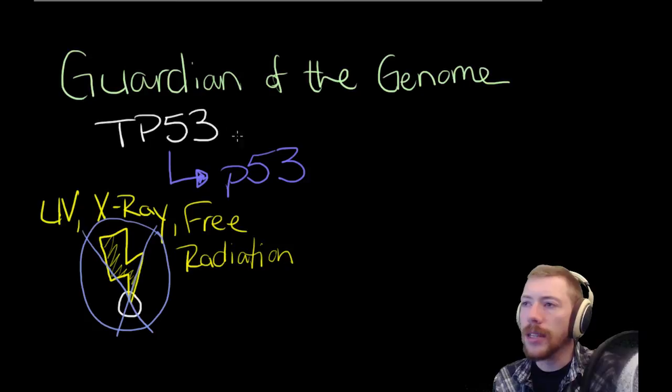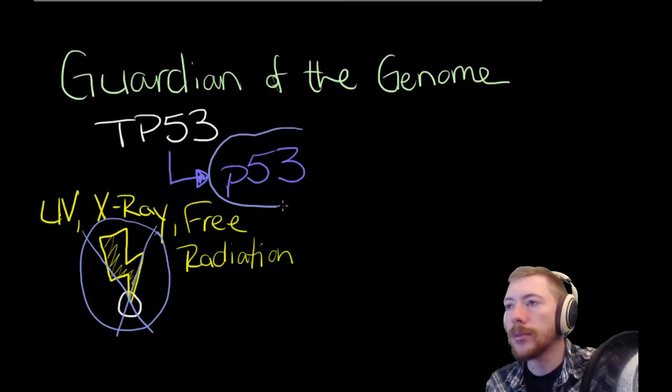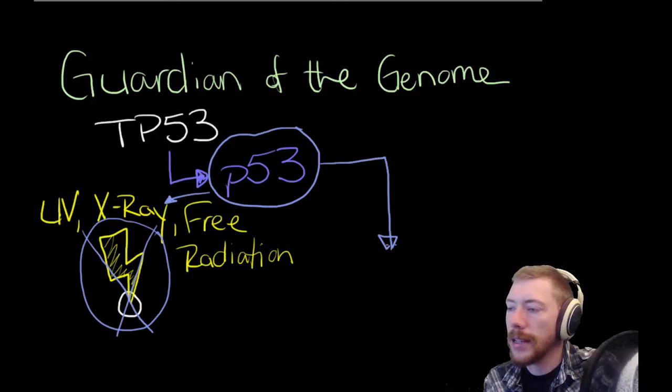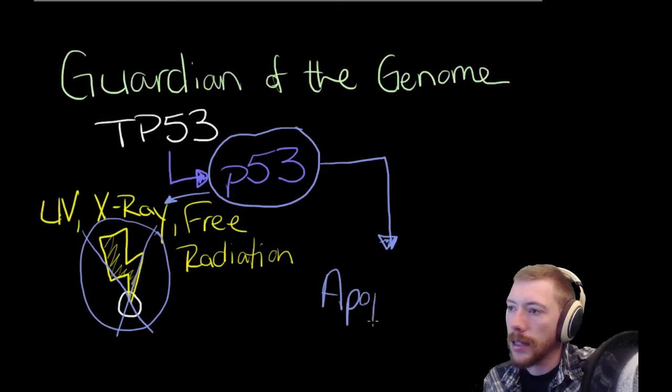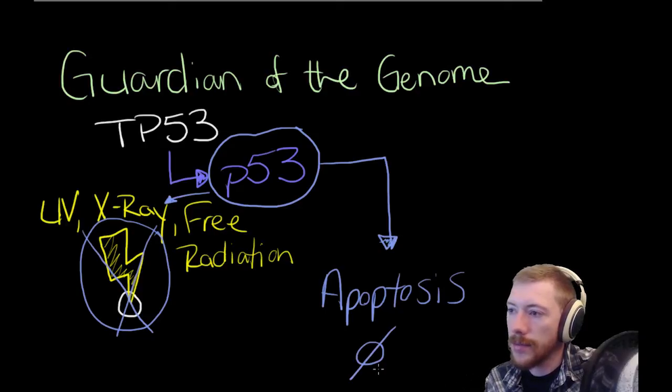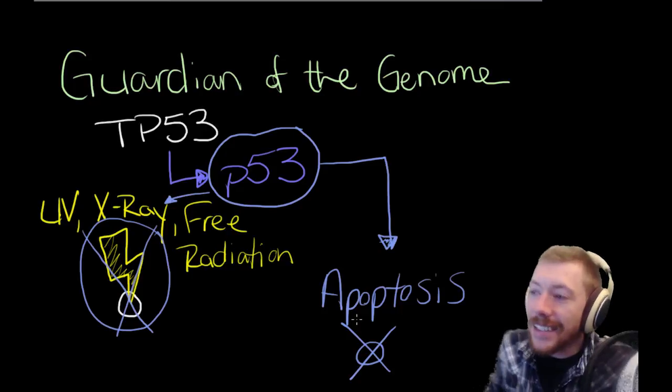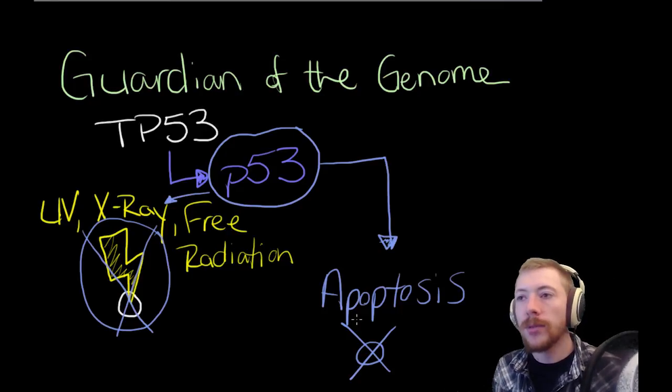But fortunately, our cells have a way of terminating these cell lines that undergo too much DNA damage before they can go on to cause something more problematic like cancer. And so how do they do that? Well, the P53 protein detects DNA damage. It detects damage to the cell. And if the damage is significant enough, it will signal the cell to undergo apoptosis. It will tell the cell, your time is up. Get out. And that is really the most effective way we have of getting rid of cancerous cells.